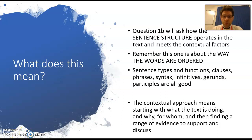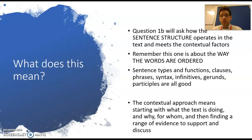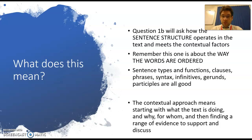When we talk about the contextual approach, 1B is going to be about sentence structure - how it operates and how that meets the context. That's about the way the words are ordered, which covers all sorts of things: sentence types (minor, simple, etc.), the functions of those sentences, particular clauses, particular phrases, the syntax, the order of the words, infinitives (verbs which have 'to' before them), gerunds (verbs used as nouns), and participles (verbs used as adjectives). They're all really good to use.